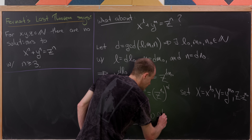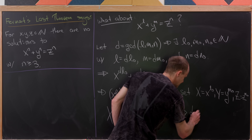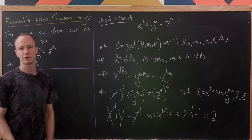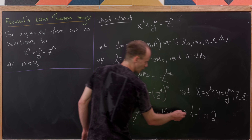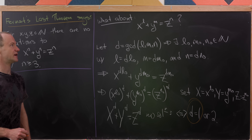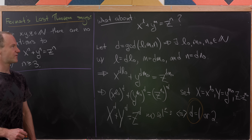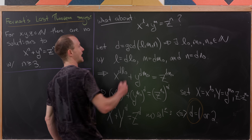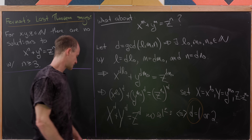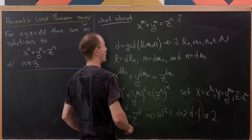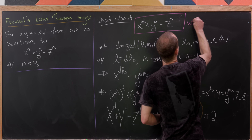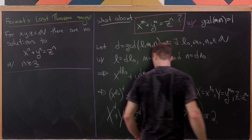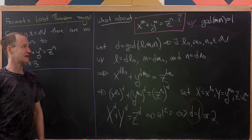That means we have solutions if and only if d is equal to 1 or d is equal to 2. We're going to focus on the case when d equals 1 and exhibit some solutions there. Furthermore, we're going to look at the case when l and m are the same — the equation x to the m plus y to the m equals z to the n — with the condition that the GCD of m and n equals 1.